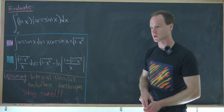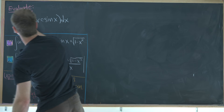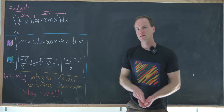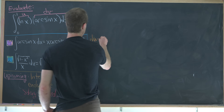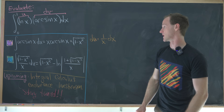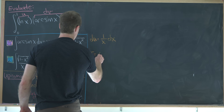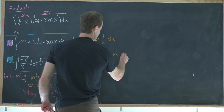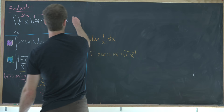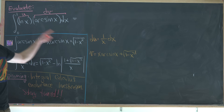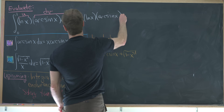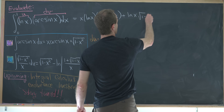Now we're ready to attack the main goal using integration by parts again. I'll set the natural log of x equal to u, and arc sine of x dx equal to dv. Taking the derivative of u gives du equals one over x dx. Taking the antiderivative of arc sine using the formula we just found gives v equals x arc sine of x plus the square root of one minus x squared.